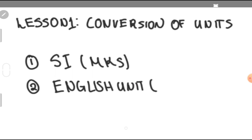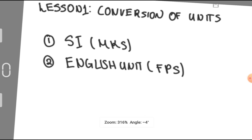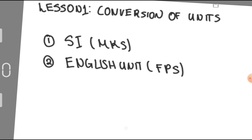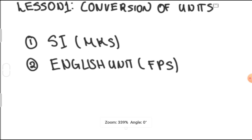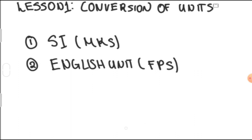The English unit is also known as FPS — feet, pounds, seconds. So these two systems of units are the main systems used in our subject. SI units use meter, kilogram, and seconds for length, mass, and time. For English, you have feet, pounds, and seconds for length, mass, and time.